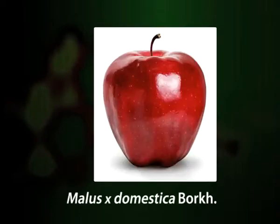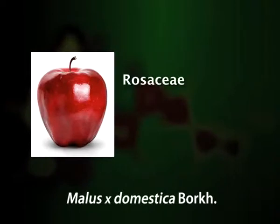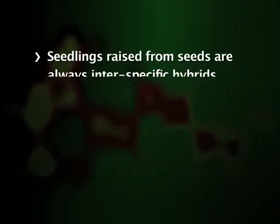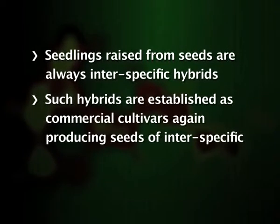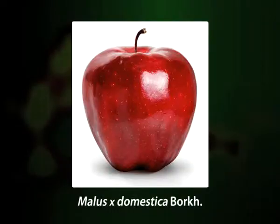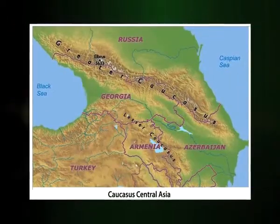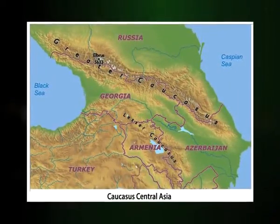Now let us discuss the origin of cultivated apple. Domestic apple, Malus domestica Borkh, belongs to the family Rosaceae and sub-family Maloideae. Due to self-incompatibility and occurrence of cross-pollination in apple, the seedlings raised from seeds are always interspecific hybrids. Such hybrids are established as commercial cultivars, again producing seeds of interspecific origin. This practice has continued since time immemorial, and hence the modern apple is thought to be a complex hybrid formed due to centuries of interspecific hybridization — hence the name Malus domestica.